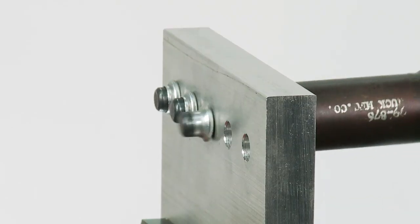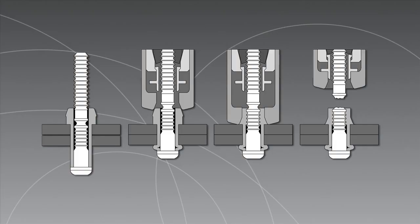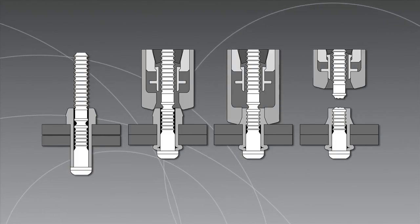It works by clamping and seizing the joint when it forms a bulb on the blind side, all this while swaging the collar on the front side.